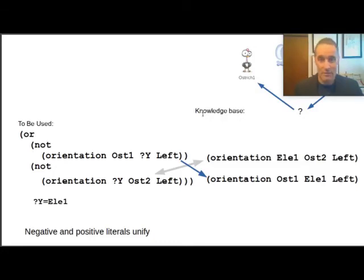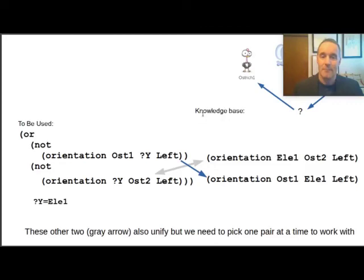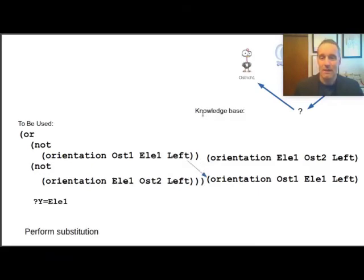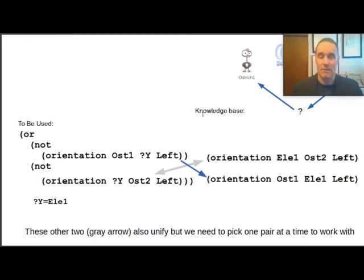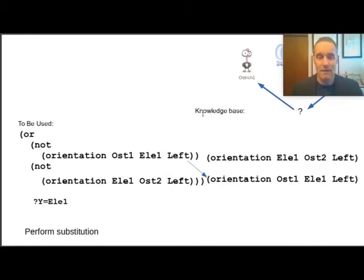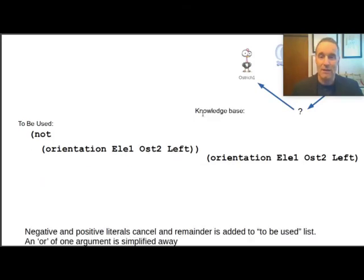We could have used the other pair, but we had to pick one. We do the substitution. Surprisingly enough, because y was the one variable we didn't have a substitution for in our first resolution, we do have it in the second one. Now we've got a fully instantiated or fully ground axiom in our to be used list. We've filled it in with elephant one. Both of these negated literals in a disjunction are fully ground. They have no variables in them. Matter and antimatter annihilate and the negated literal and its positive version go away.